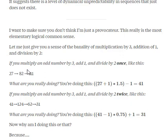If you multiply an odd number by 3, add 1, and divide by 2 once, like this: 27, 82, 41, what you're really doing is adding 1 to the original number, multiplying by 1.5, and subtracting 1.